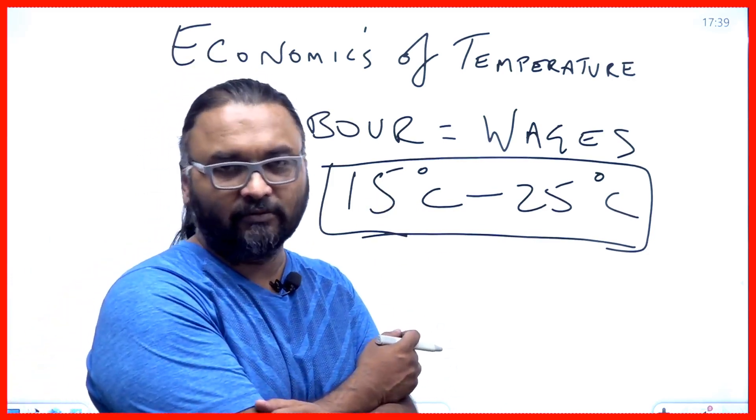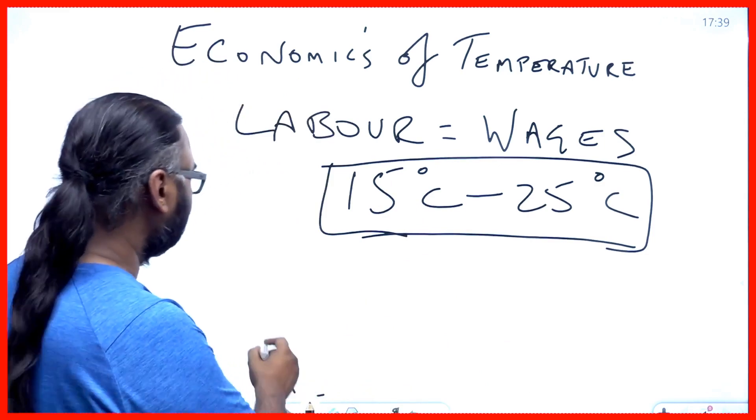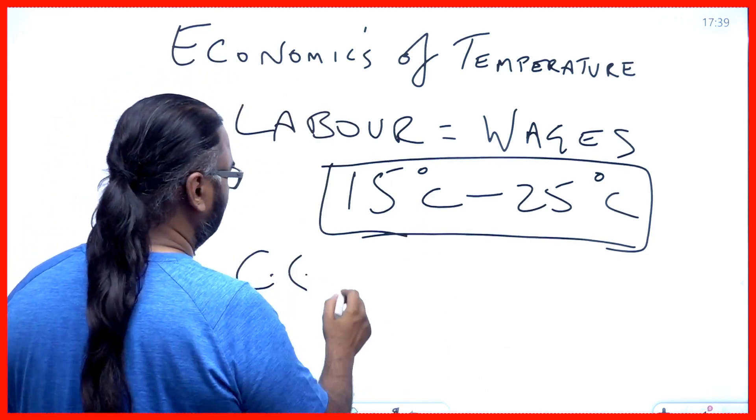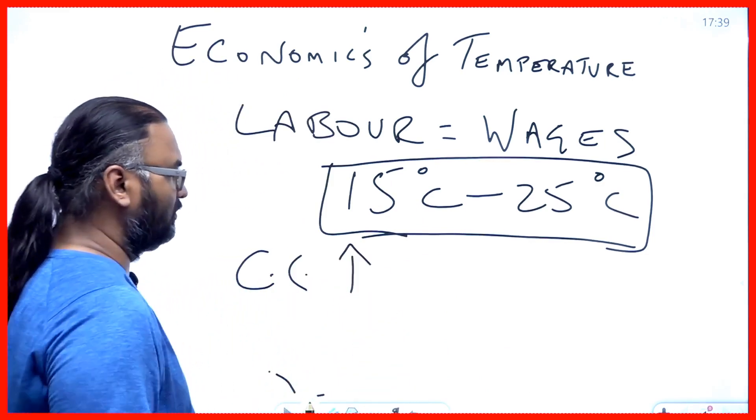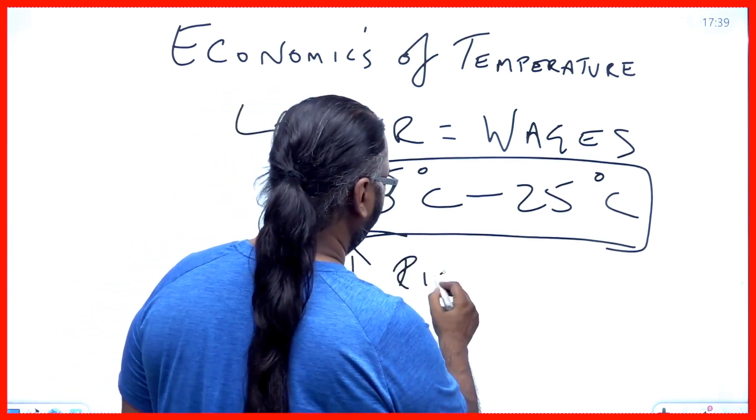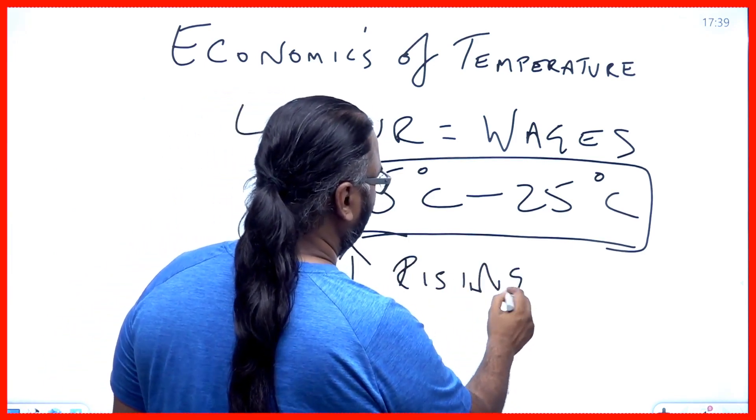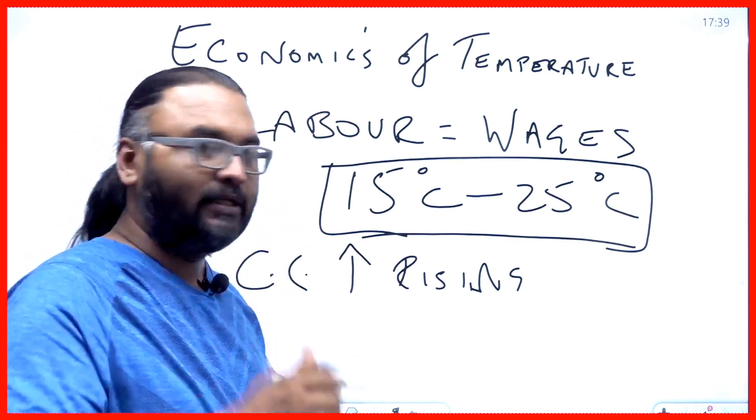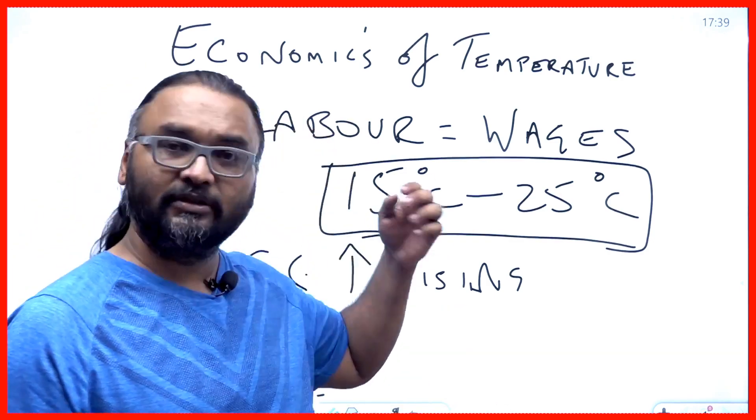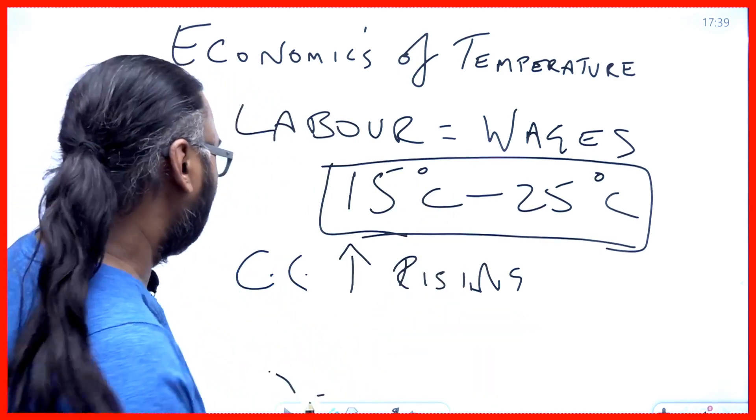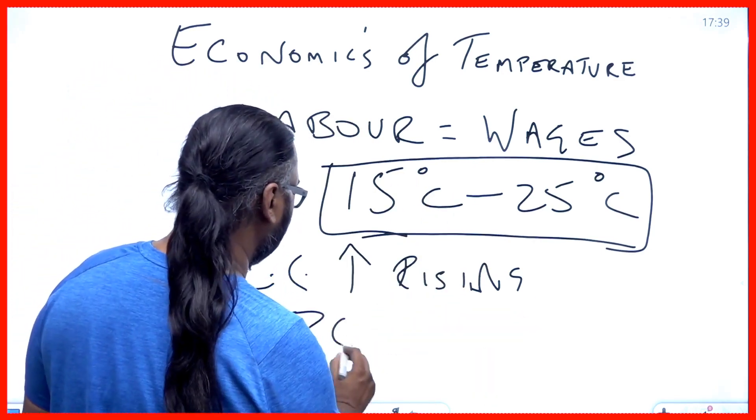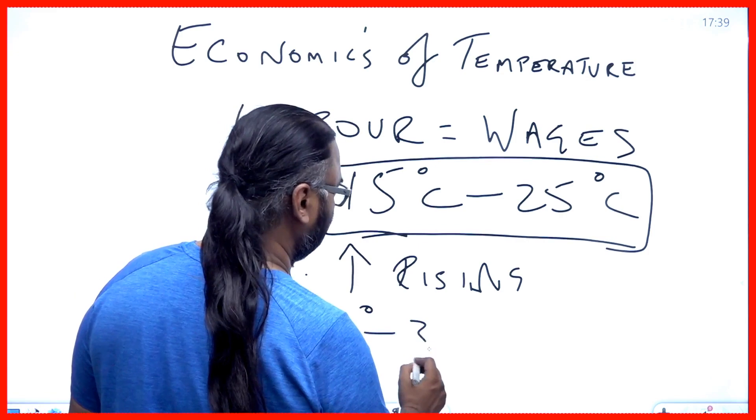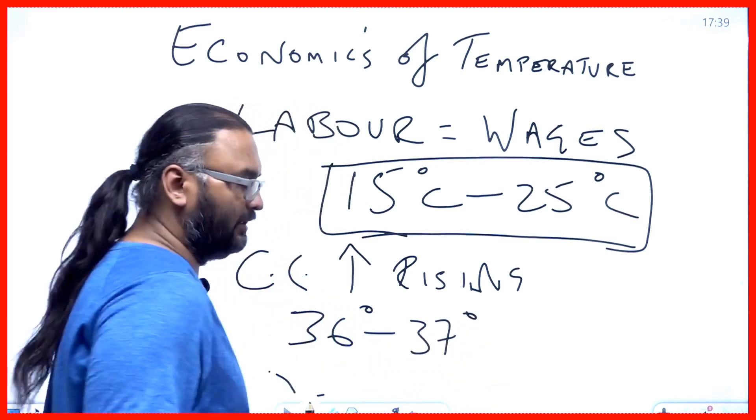What happens is because of climate change or whatever other reasons you may attribute, global temperatures are rising and going up. Why is labor most productive at this temperature? Because the human body also exists at this temperature range, 36 degrees to 37 degrees centigrade.